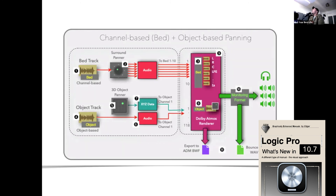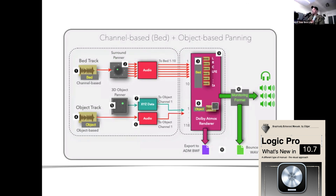This is how this is going to be routed inside the DAW. All the bed tracks are routed to the first 10 channels — left, right, center, the LFE, the left side, and so on. The object tracks are not being sent through the surround panner. They're being sent directly to the 3D object panner, which is basically burning metadata into the Dolby Atmos renderer. These are two different processes going on at the same time. All I'll say about mastering: you want your tracks to be at negative 18 LUFS — that's what Dolby recommends.